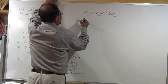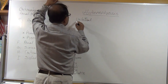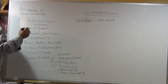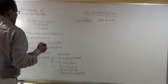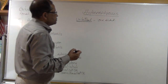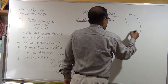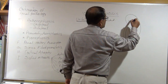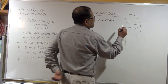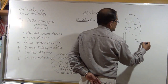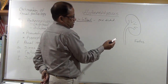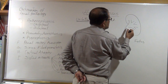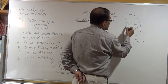Unilateral means one-sided. In a fetus, you might see hydronephrosis on the left side. If the left kidney shows hydronephrosis in the fetus, the most common cause is pelvi-ureteric junction stricture.